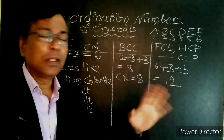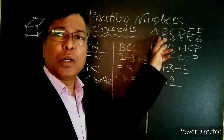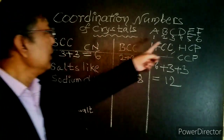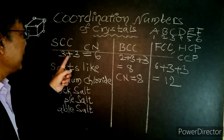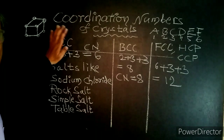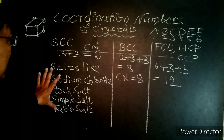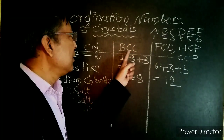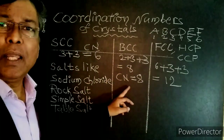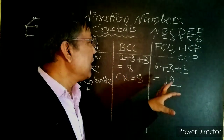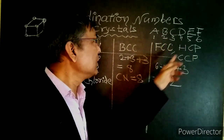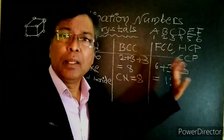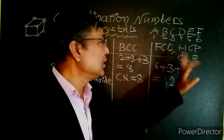To summarize the first trick: write A, B, C, D, E, F and number them 1 through 6. For SCC, only the letter C appears twice: 3 plus 3 equals 6. For BCC, B is 2 and C plus C is 3 plus 3, totaling 8. For FCC, F is 6 and C plus C is 3 plus 3, totaling 12. HCP and CCP are similar to FCC and also have coordination number 12.